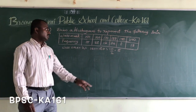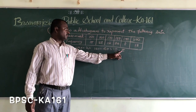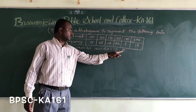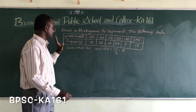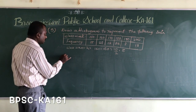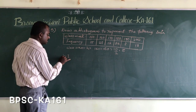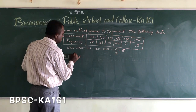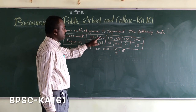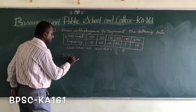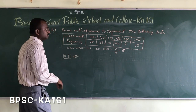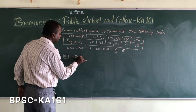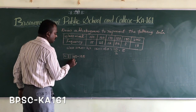That means we have to add 5 to 150 and subtract 5 from 150. So the first class interval: 150 minus 5 is 145, and 150 plus 5 is 155. So the first class interval is 145 to 155.